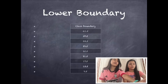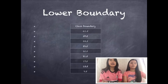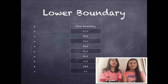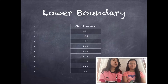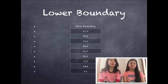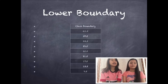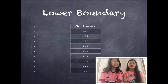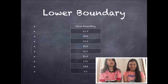The formula for the class boundary is the lowest value of the class interval minus 0.5. So we have: 9.5, 13.5, 17.5, 21.5, 25.5, 29.5, 33.5, 37.5, and 41.5.